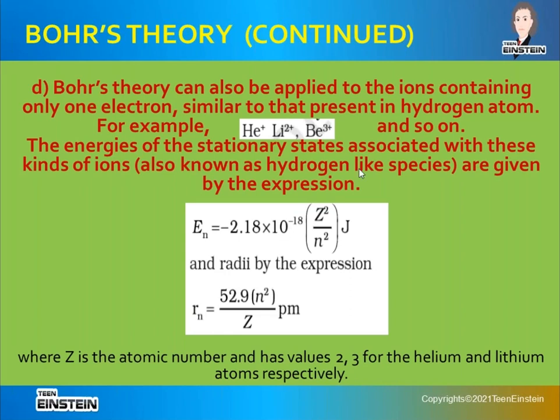In the last session we were doing Bohr's theory and covered several postulates. As a quick revision: we learned how to calculate angular momentum, how to calculate radius, and how to calculate the energy of a particular orbit. Now we are moving on to how to calculate energy in terms of atomic number.